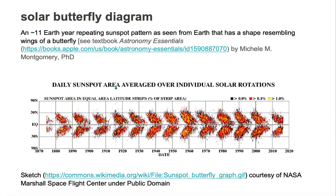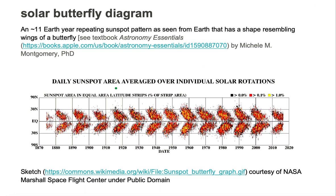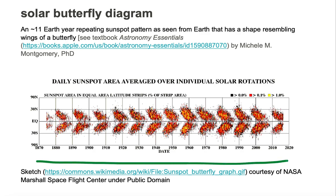Let's take a look at an example of a solar butterfly diagram. In this diagram, time increases to the right in units of years. The far left is 1870 and the far right is the year 2020. The vertical axis is latitude of the Sun.